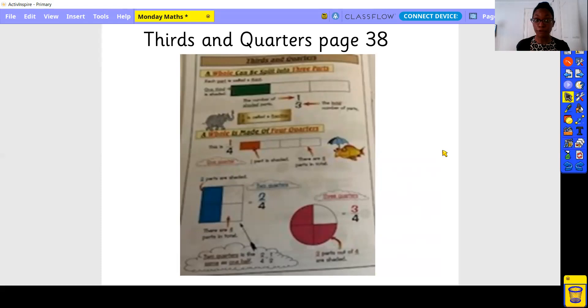A whole is made of four quarters. This is one quarter. Again, like before, one part is shaded. There are four parts in total. Here you have the one quarter. As we move down, things change a bit. Two parts are shaded. Now we have two quarters. There are still though, four parts in total. Over here you can see we've got three quarters. Three out of the four are shaded. Two quarters is the same as one half. We'll come onto a bit more of that later on in the week.